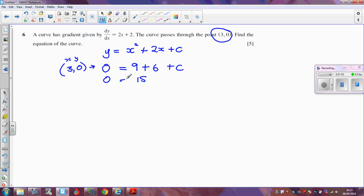So 0 equals 15 plus c, which means that c has to be minus 15. We can now go back to the equation of the curve and substitute in that value of c, so y equals x squared plus 2x minus 15. That's the equation of the curve.